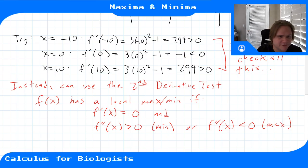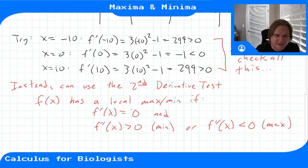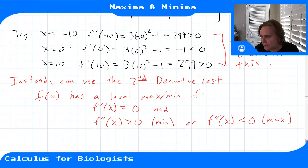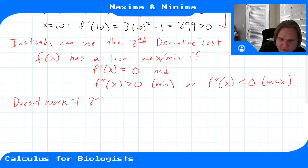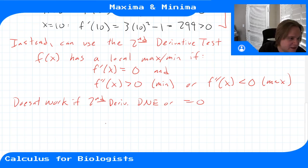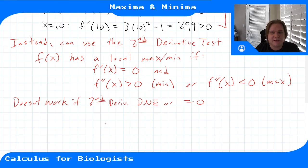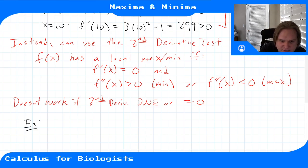The test doesn't work when the derivative doesn't exist at the critical point, because the second derivative probably doesn't exist there either. It also fails when f''(x) = 0—that indicates you have both a critical point and an inflection point at the same location.